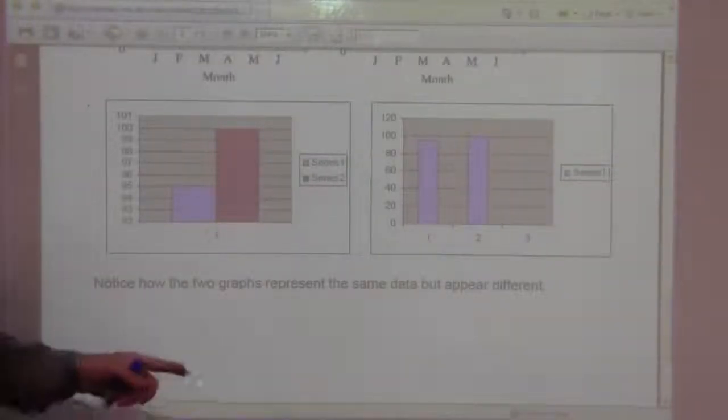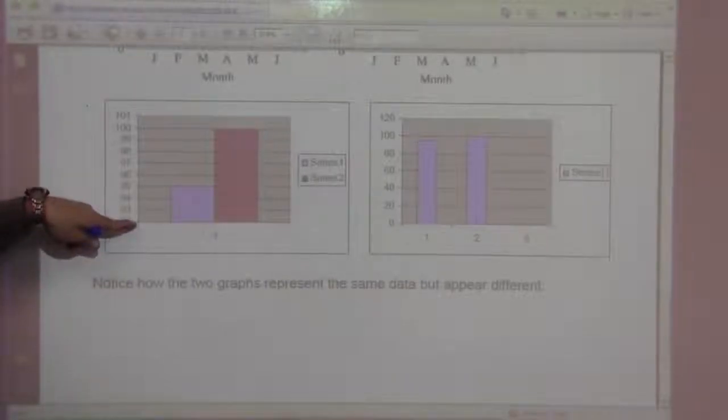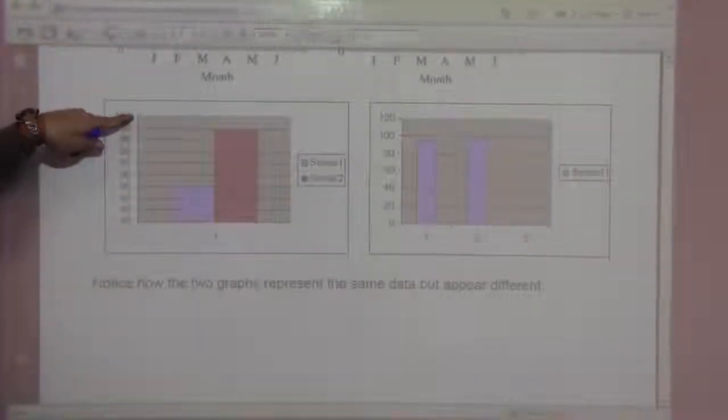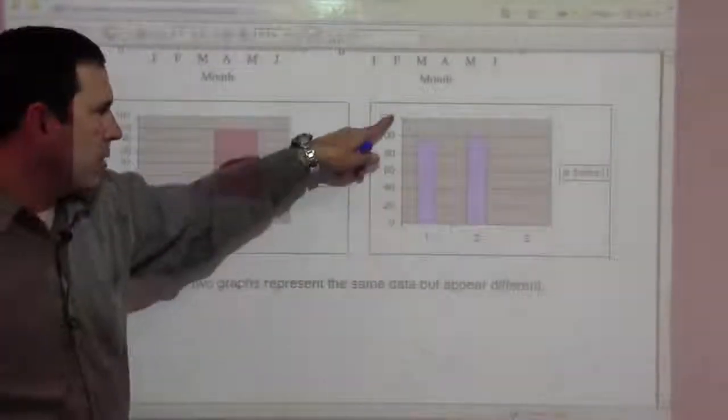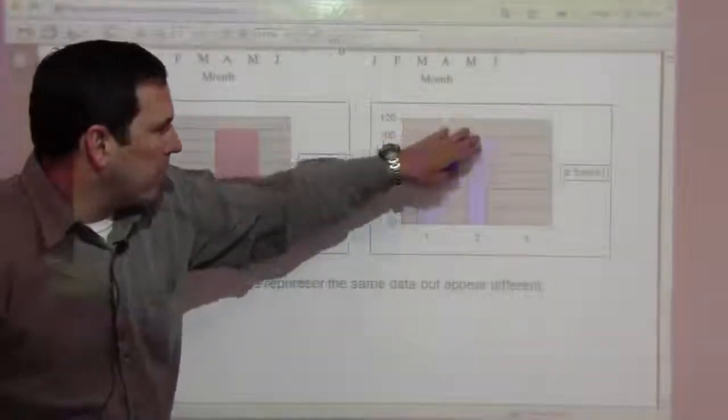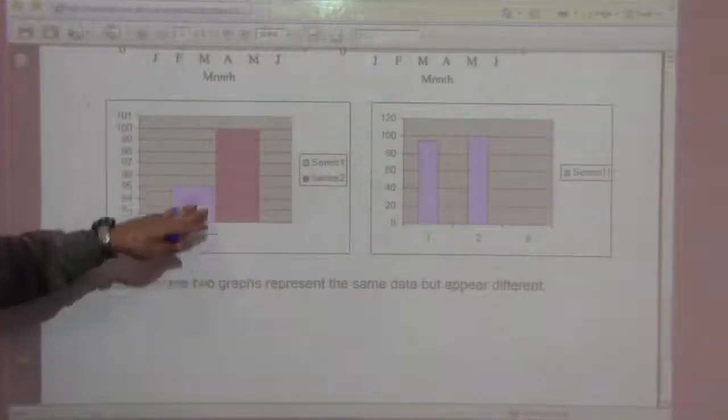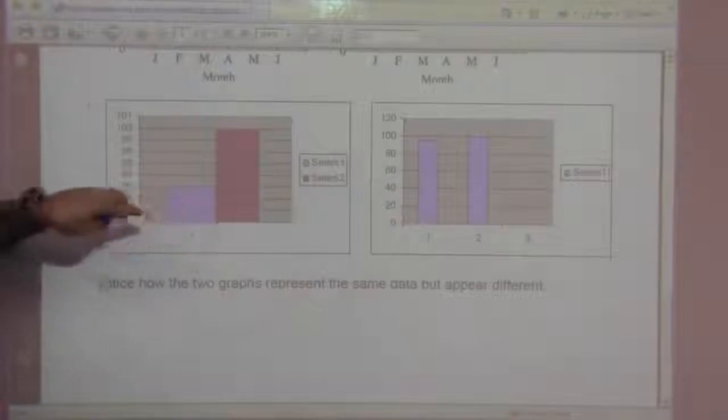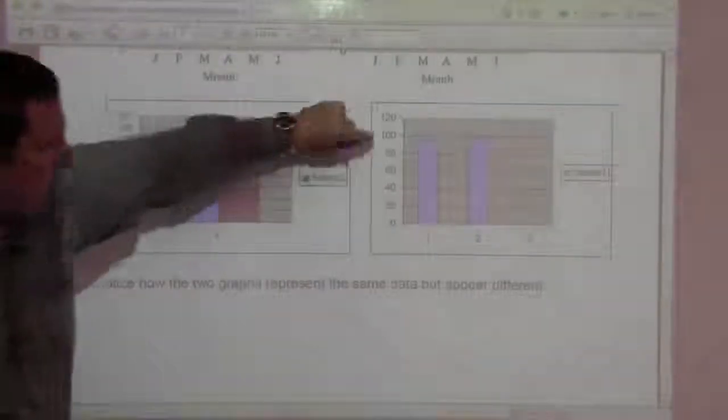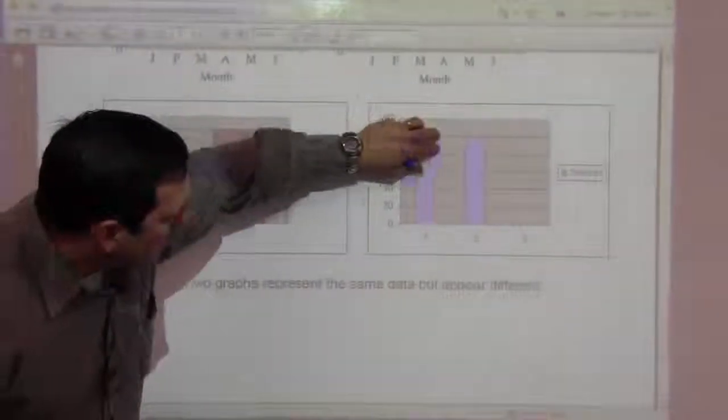Next one as well. This graph goes from 92 to 100 or 101. This goes from 0 to 120. So in this graph these two values look really close. In this graph they look very far apart because they're really focusing on the upper part. They're focusing on just this little region up here.